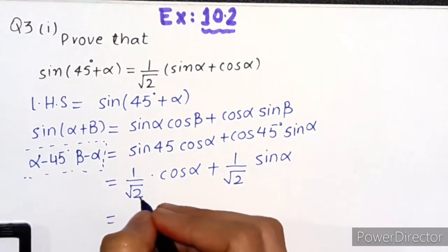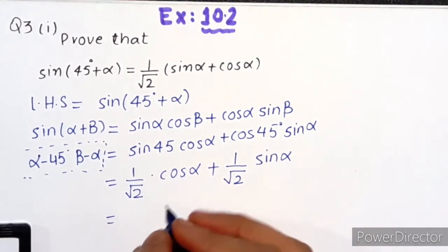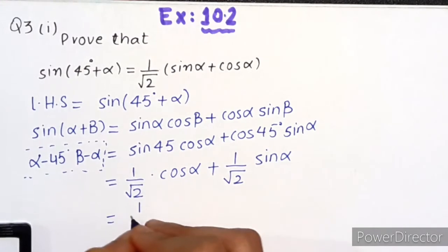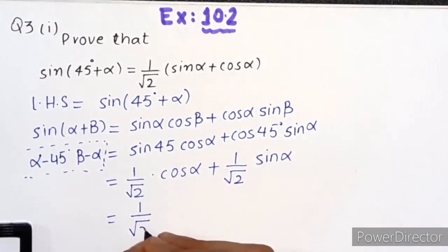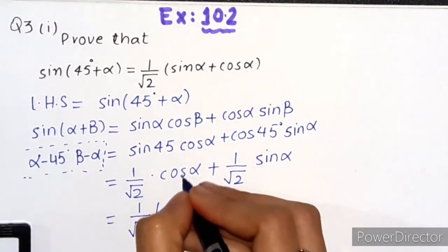1 over root 2 is common in both terms, so we'll take it out as common. After taking 1 over root 2 common, we're left with cos α plus sin α.